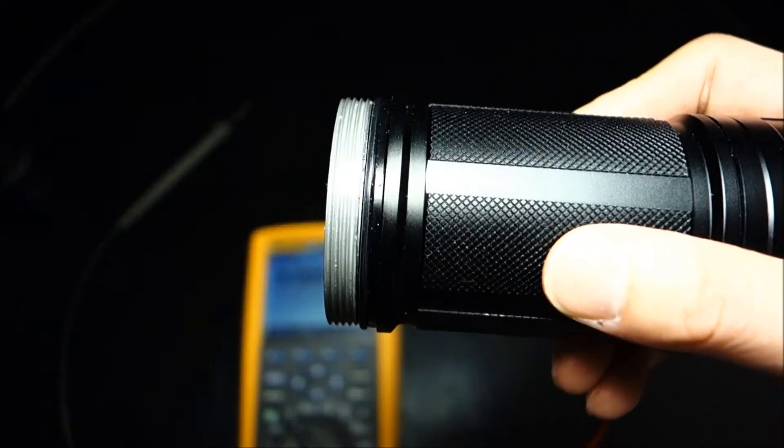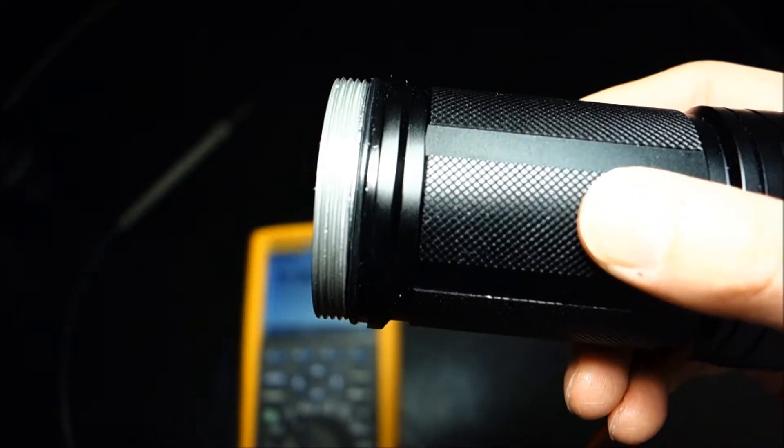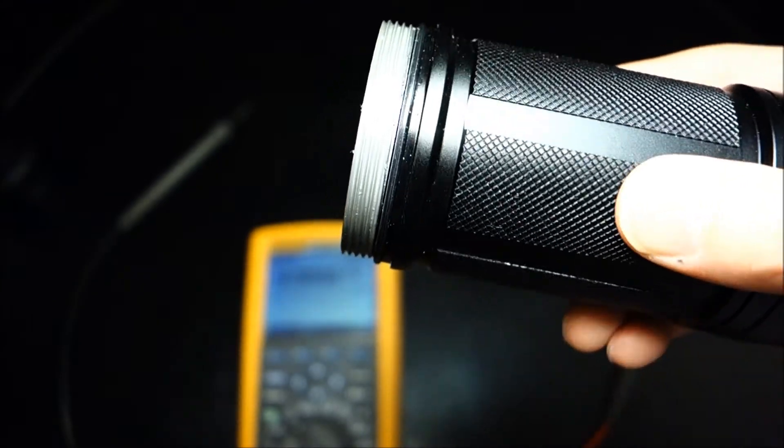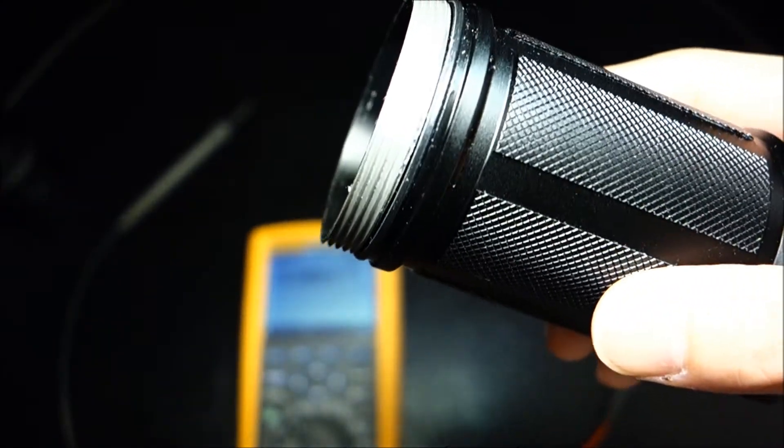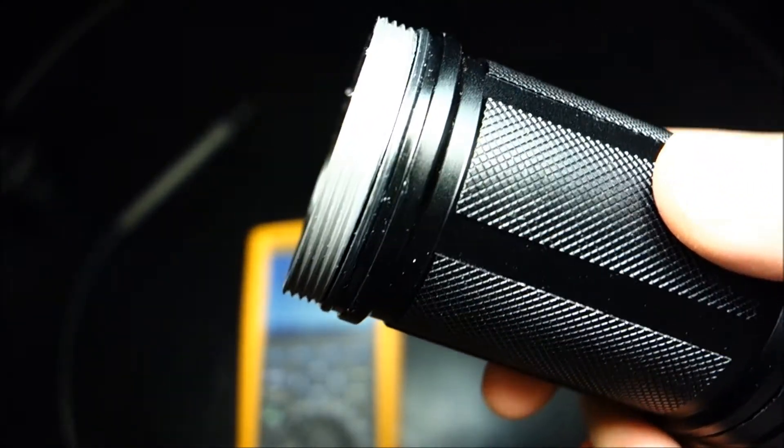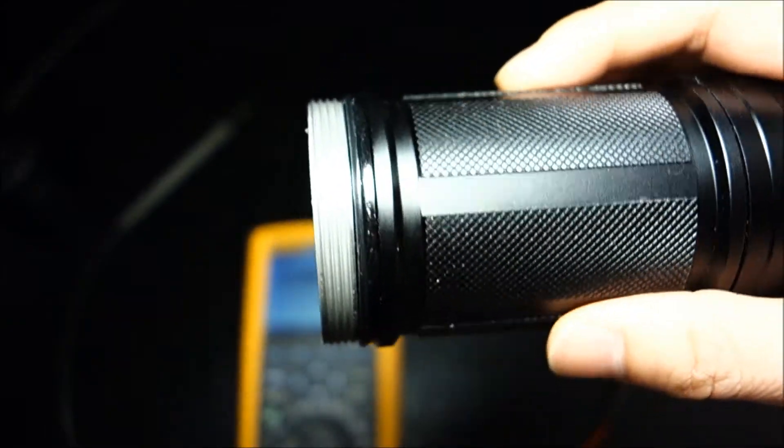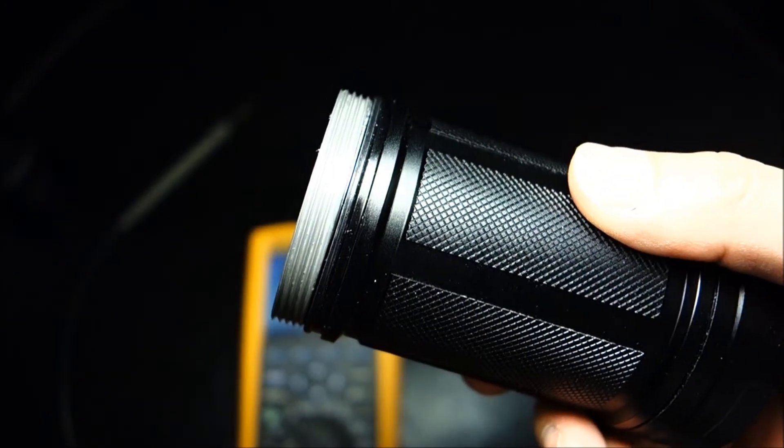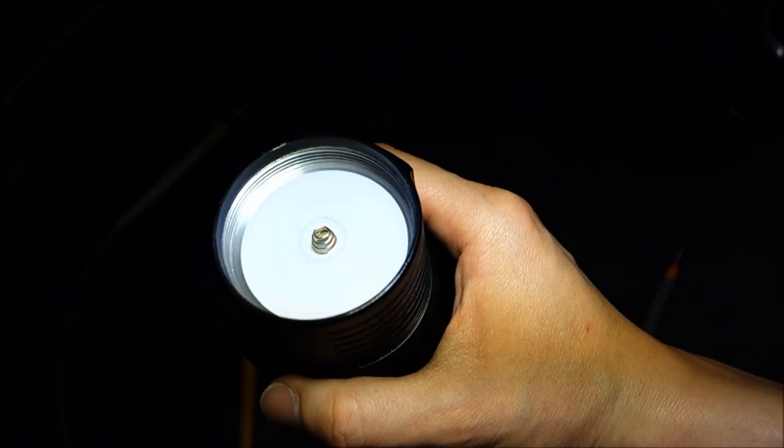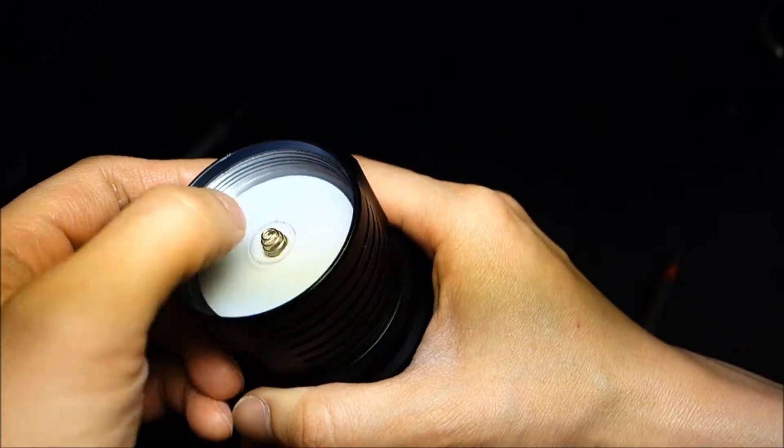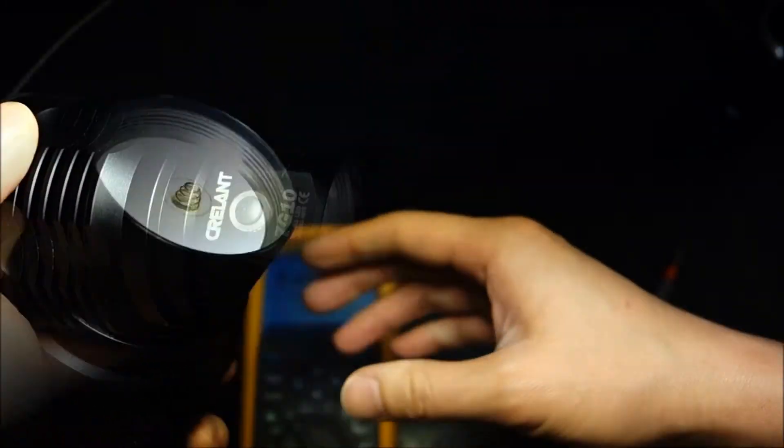Now, these threads are not anodized nor are they a square cut. And if there was one particular, I would say weak point of this light thus far that I've seen are these threads because they actually don't thread on very smooth, even though they are amply greased. Now, at the base of the head there is that positive spring, and again, as you can see there, the threads are not anodized.